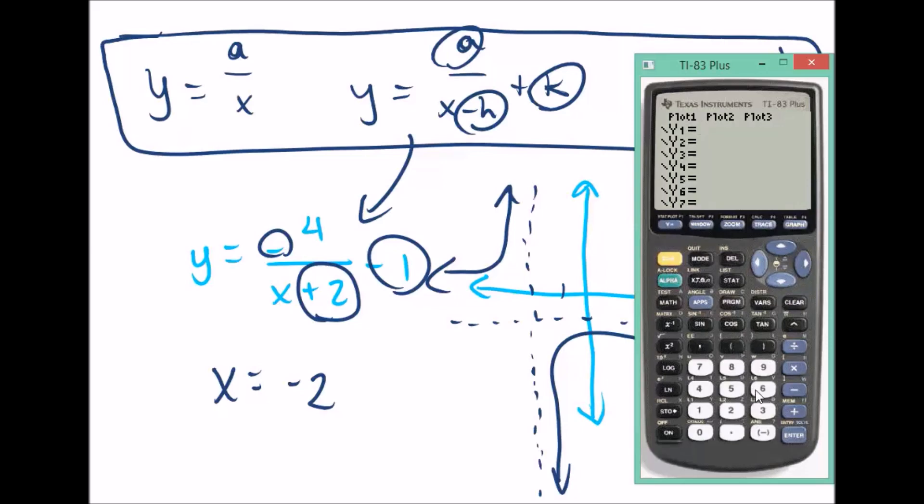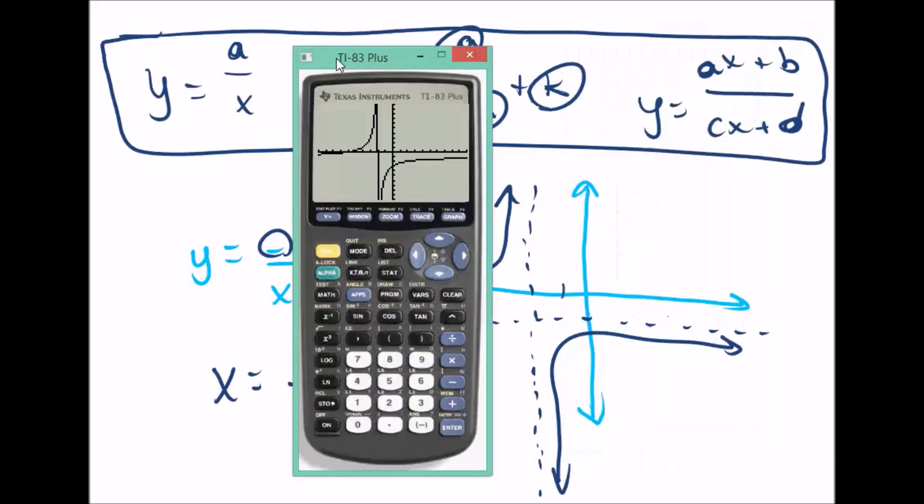So we have equals negative four divided by, and I have to do this in parentheses. I know a lot of your calculators are fancier than mine. Graph it, zoom out just a bit, or zoom standard, and it looks just like we would expect.